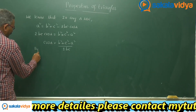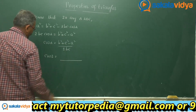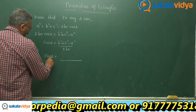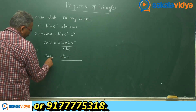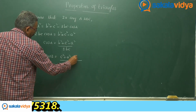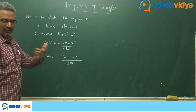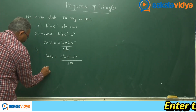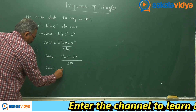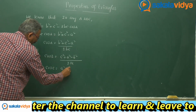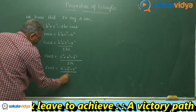Similarly, cos B = (c² + a² − b²) / 2ca. Here, c² and a² are the adjacent sides and the opposite side is b, so we subtract b². Can you write the cos C value? Yes, cos C = (a² + b² − c²) / 2ab.